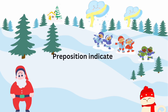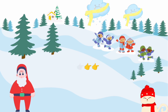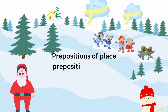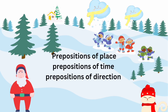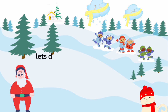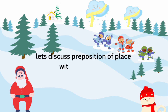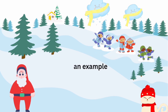Preposition indicates preposition of place, time and direction. Let's discuss preposition of place with an example.